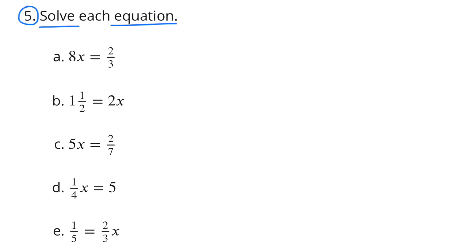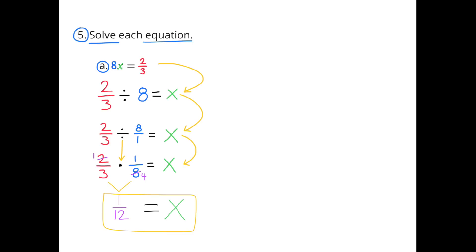Number 5. Solve each equation. A: 8x equals 2 thirds, which is the same as 8 times x equals 2 thirds. We need to solve for x by dividing 2 thirds by 8. 2 thirds divided by 8 equals x. Multiplying by the reciprocal: 2 thirds times 1 over 8 equals x, which is 1 twelfth. So x equals 1 twelfth.